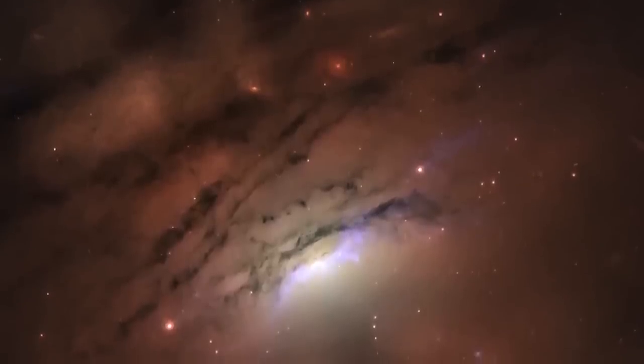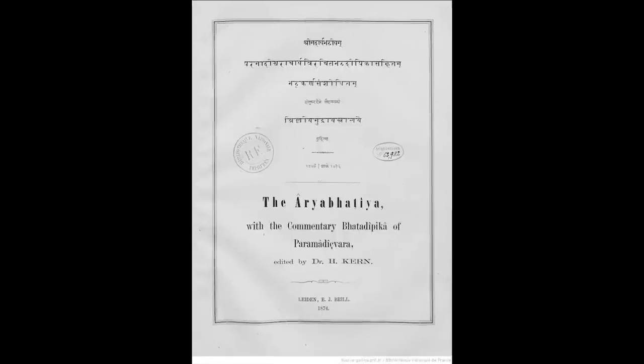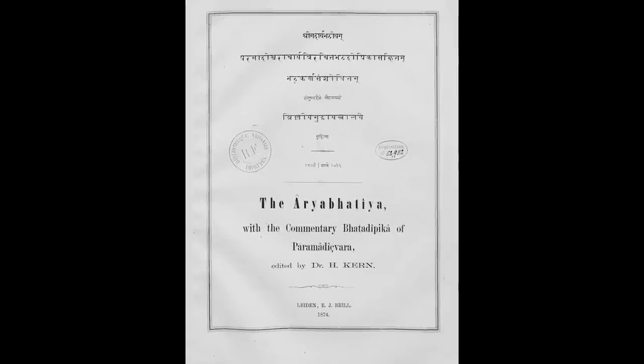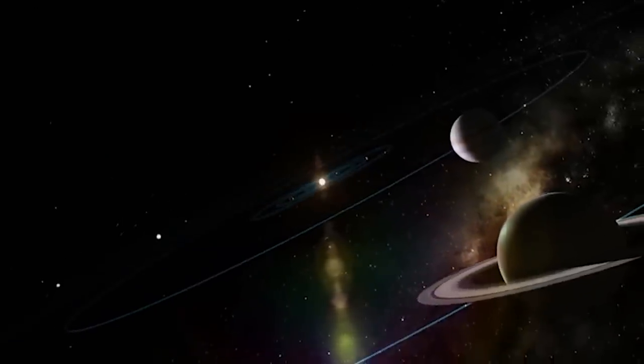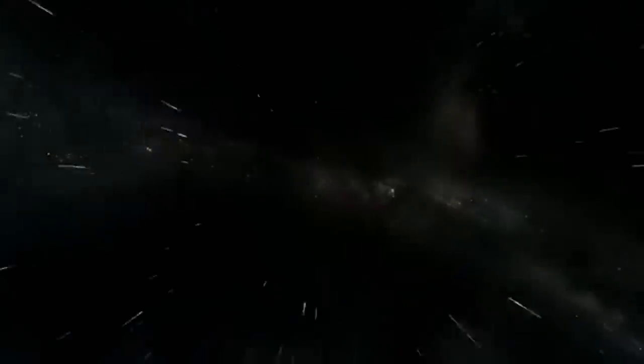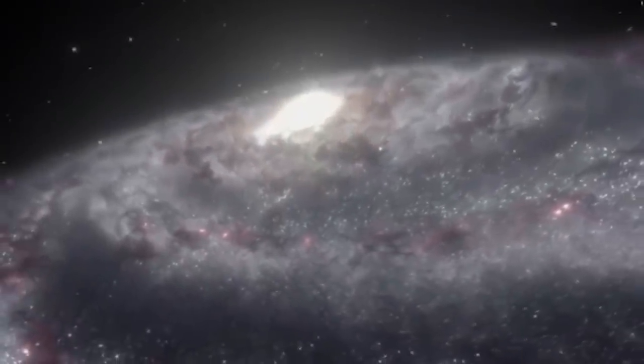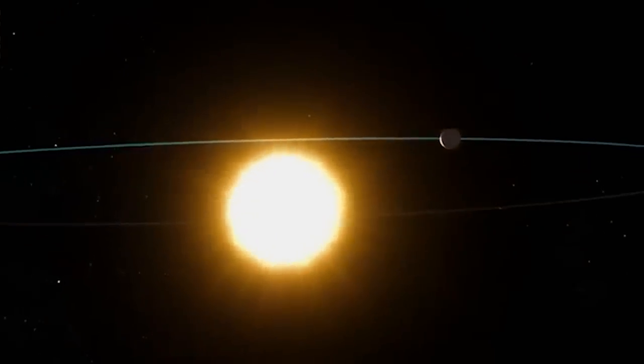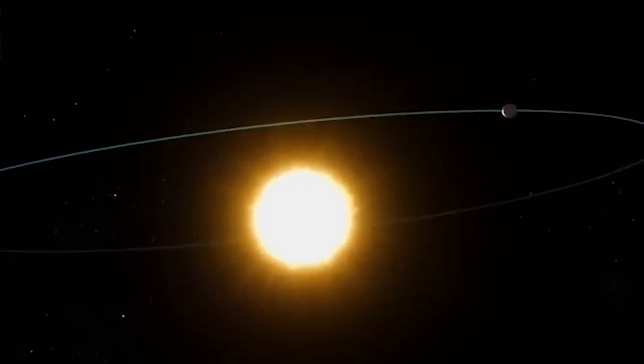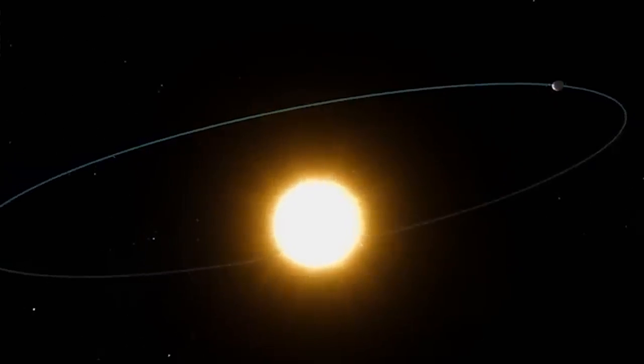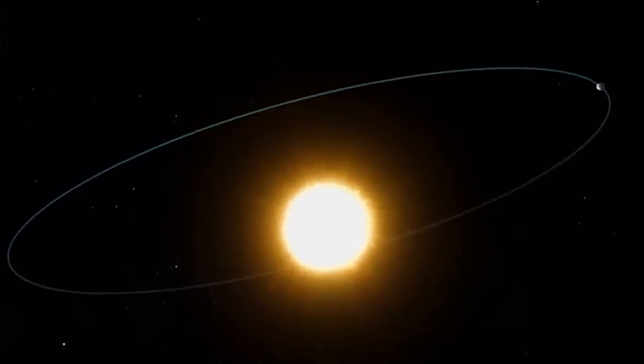In 499, the Indian astronomer Aryabhata wrote a book entitled Aryabhataia, in which he offers a summary of his knowledge in astronomy and mathematics. He also exposes his vision of a heliocentric world, which is explained by the earth in rotation, turning around the sun.